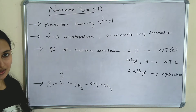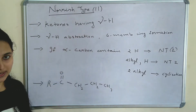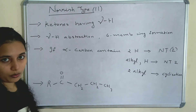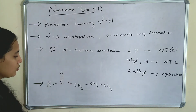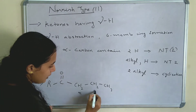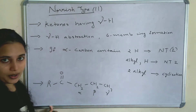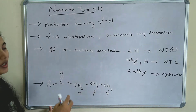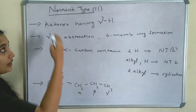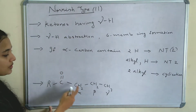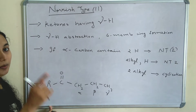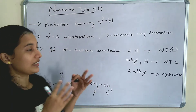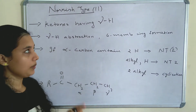In Norrish type 2 reactions, ketones having gamma hydrogen will give this type of reaction. Let's take this compound — this is a ketone. This is the alpha carbon, this is beta, and this is gamma. This gamma carbon contains 3 hydrogens. This gamma hydrogen plays the main role in Norrish type 2 reaction. This is the main point to remember to differentiate between Norrish type 1 and Norrish type 2.